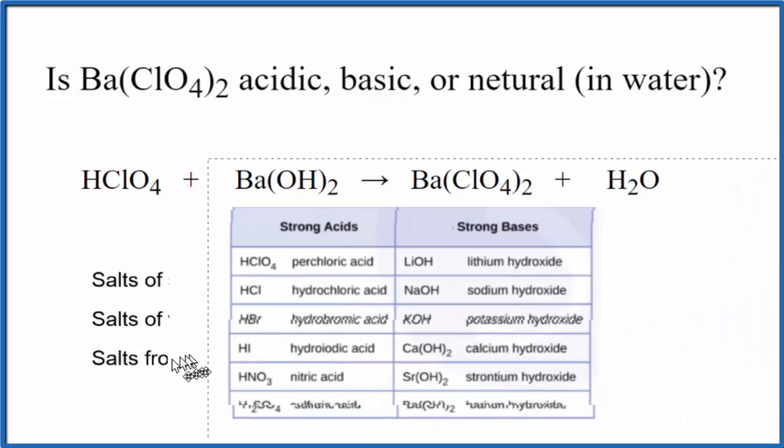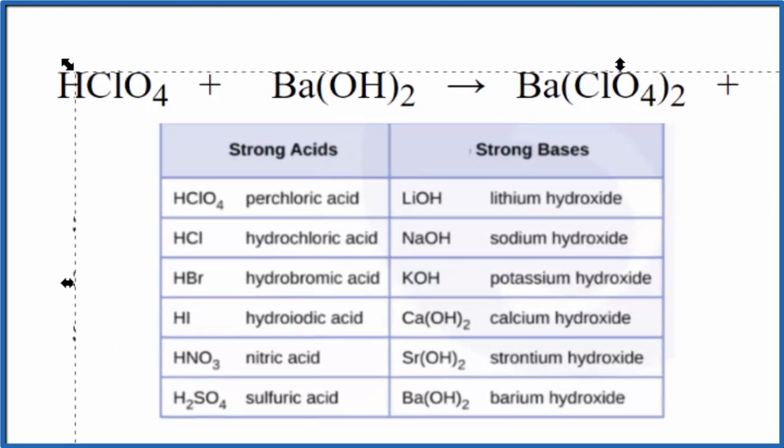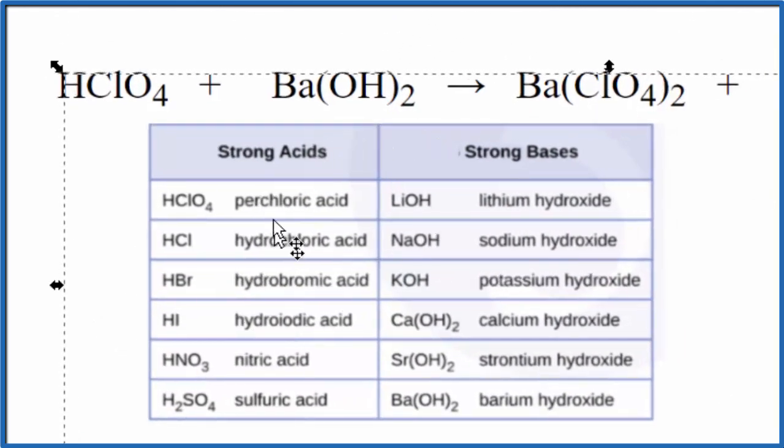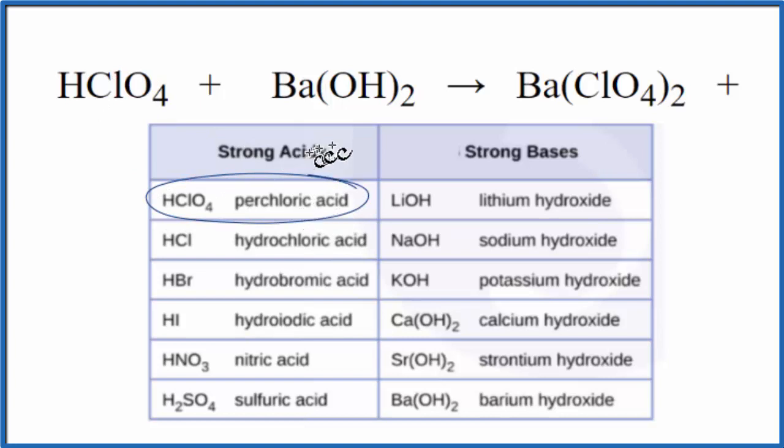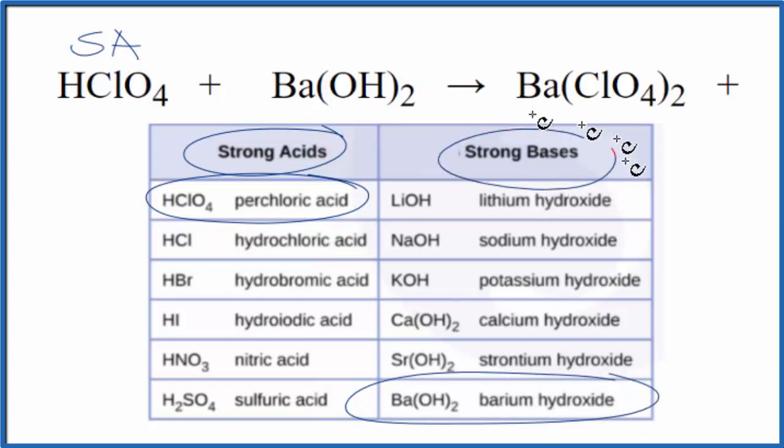So this is a really good table to memorize. We're looking for HClO4, that's right here, perchloric acid. So we have our perchloric acid, that's a strong acid. We're looking for barium hydroxide right here. That's a strong base.